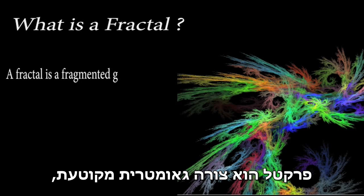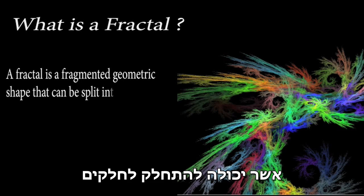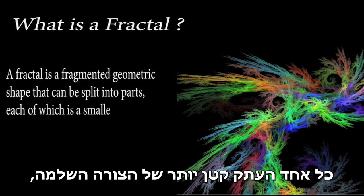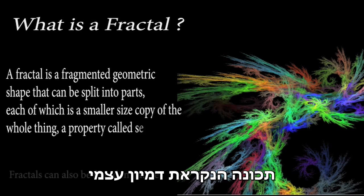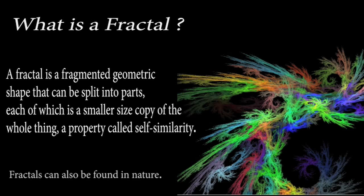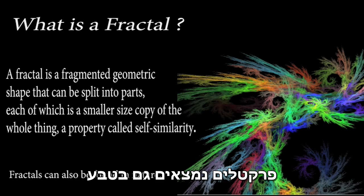A fractal is a fragmented geometric shape that can be split into parts, each of which is a smaller size copy of the whole thing, a property called self-similarity. Fractals can also be found in nature.